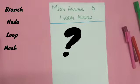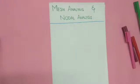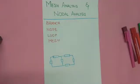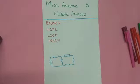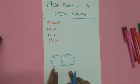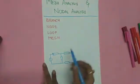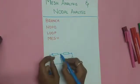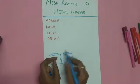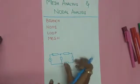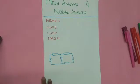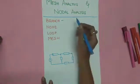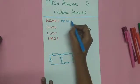Let's get started. What is a branch? A branch is nothing but a circuit element like a resistor, inductor, or a capacitor — it can be anything. For example, in this circuit, each individual element is called a branch. So in a circuit, the number of branches equals the number of circuit elements.